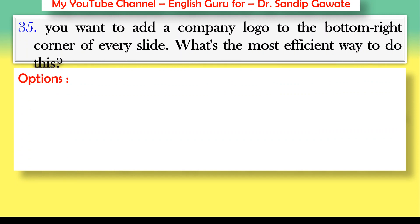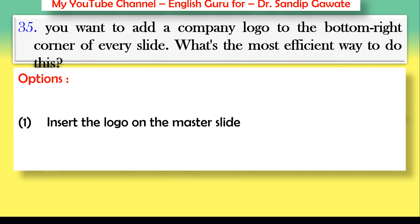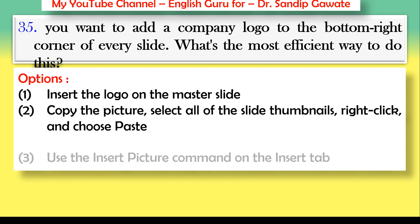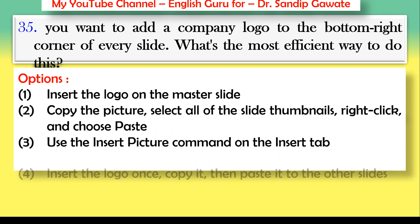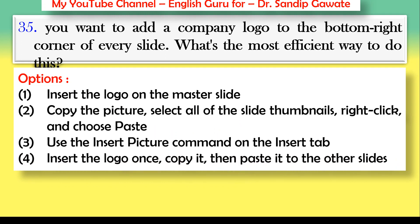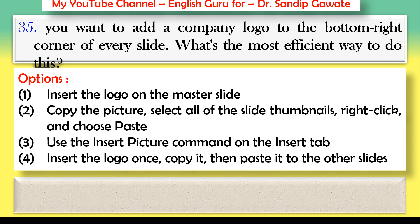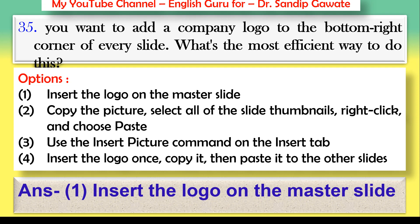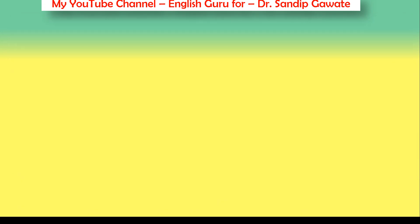Question 35: If you want to add a company logo to the bottom right corner of every slide, what is the most efficient way to do this? The correct answer is option number one — insert the logo on the master slide.